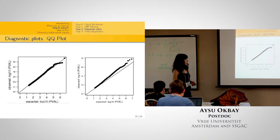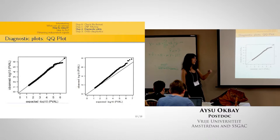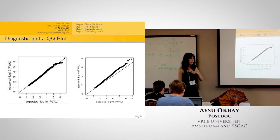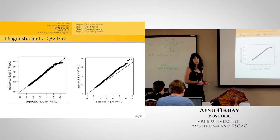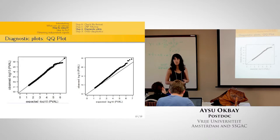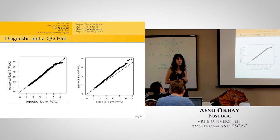QQ plots: the one on the left is what it should look like. The one on the right — with early lift-off from the 45-degree line — is not necessarily problematic if you have a very large sample size due to true signal. But if it comes from a cohort with, say, a thousand individuals, it shouldn't lift off that early, and this is usually indicative of a confounding problem, typically population stratification.